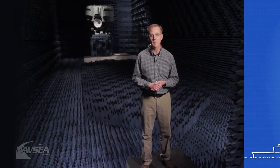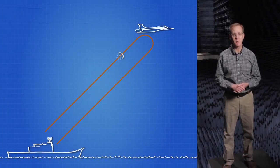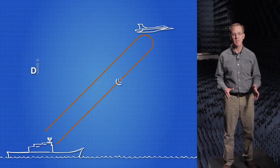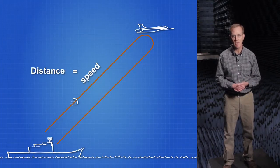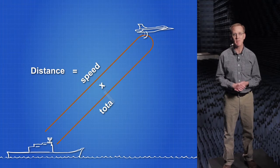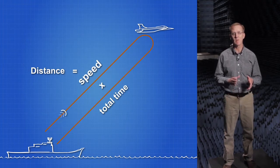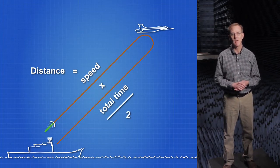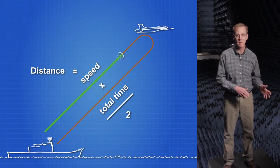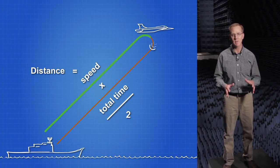The computer uses a formula to answer the question: how far away is this object? The formula is one that you can use in your classroom and is defined as distance equals the speed of the traveling radar wave multiplied by the amount of time it takes the wave to return to the receiver. Distance equals speed multiplied by time. You have to divide this total distance by two since the wave travels from the ship to the object and then back.